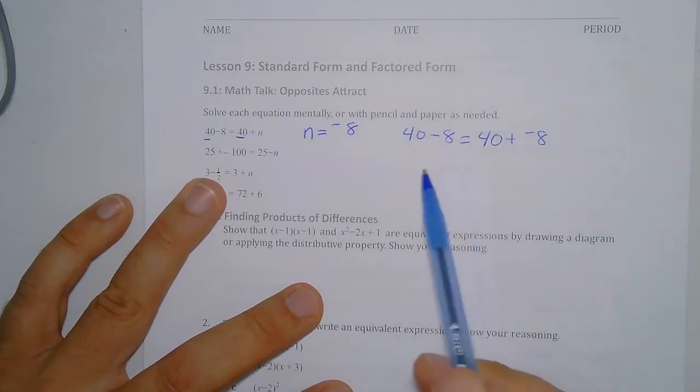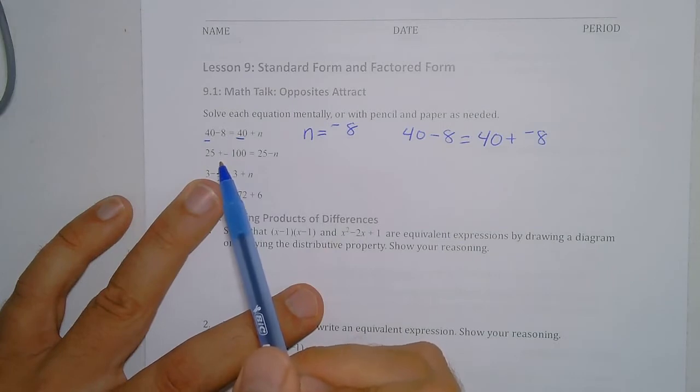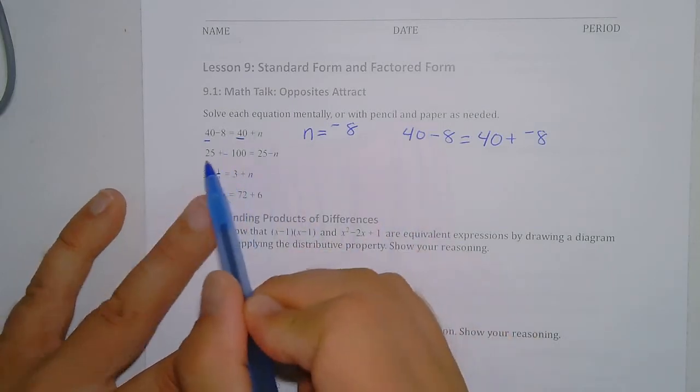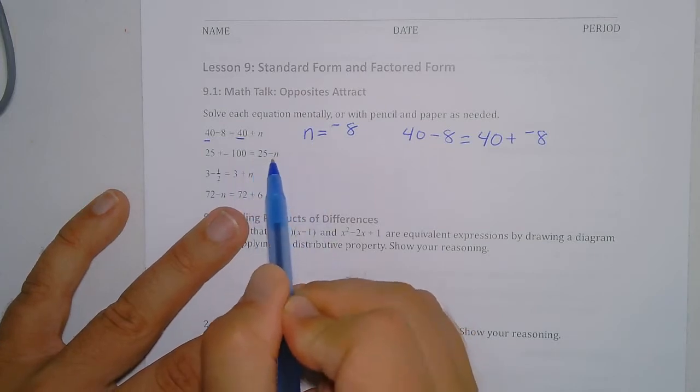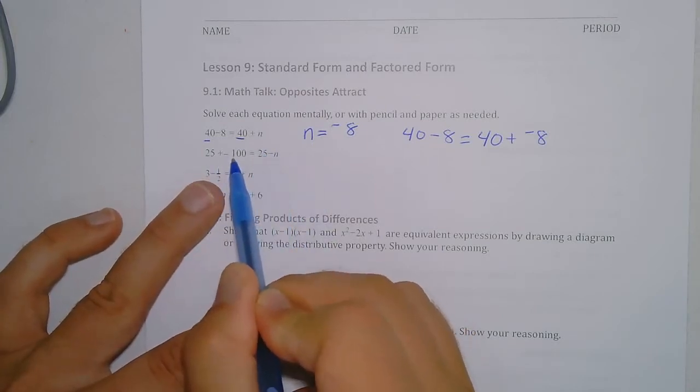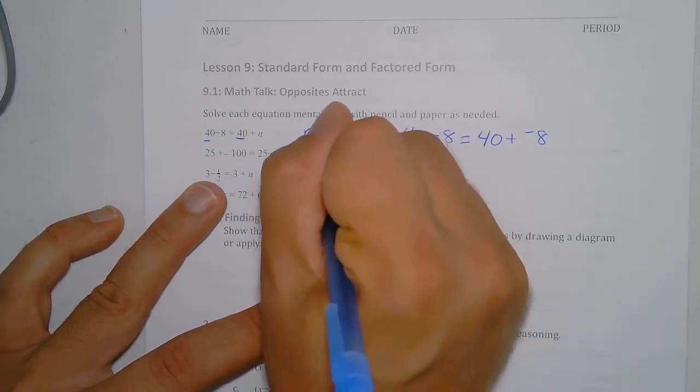Similarly here, if I have 25 + (-100), that's the same as 25 - 100. Well, instead of plus negative 100, you can think of that as 25 - 100.